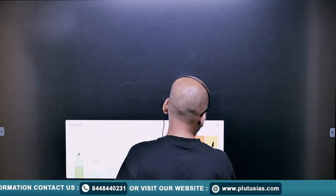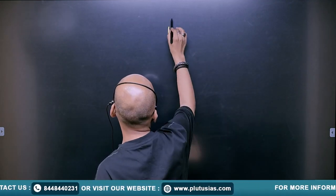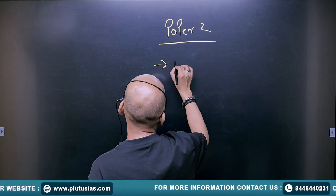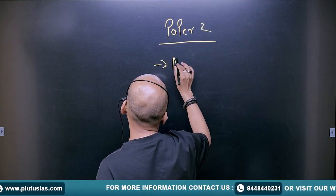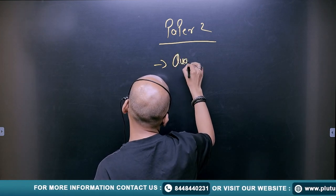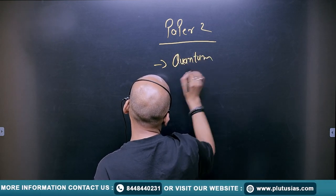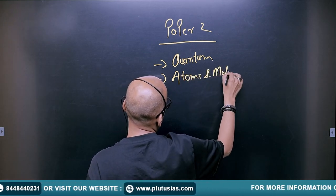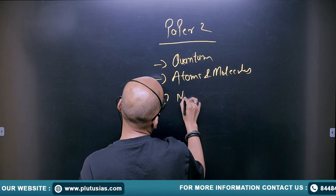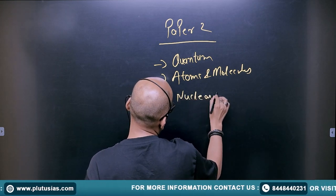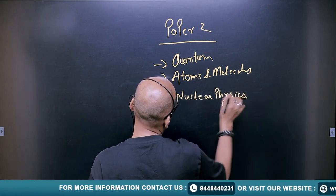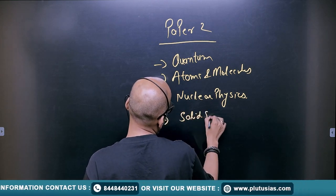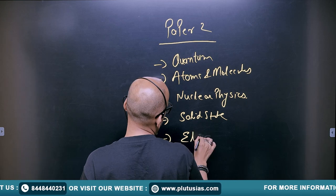Moving on to paper 2, which is again of 250 marks. Paper 2 comprises of quantum mechanics, then you have atoms and molecules, nuclear physics, then solid state physics, and finally electronics.